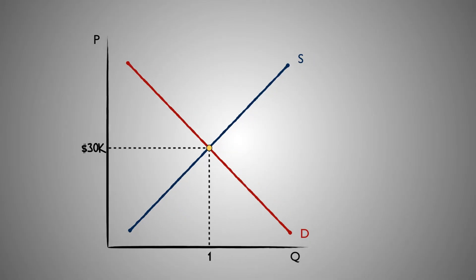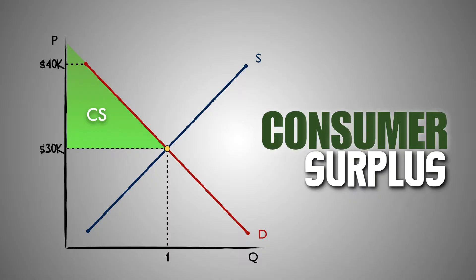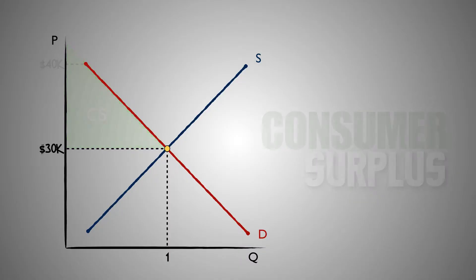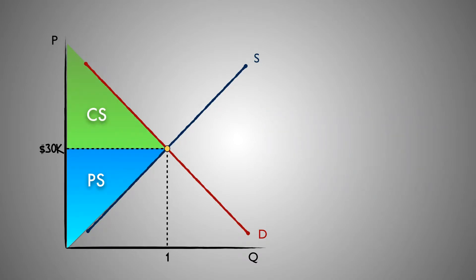From here, we can visualize the benefit you gained and the benefit the dealer gained from this transaction. The difference between your buyer's maximum price of $40,000 and the equilibrium price of $30,000 at a quantity of one car is the consumer surplus you gained in the market. The difference between the equilibrium price of $30,000 and the seller's minimum price of $20,000 at a quantity of one car is the producer surplus gained by the firm. The areas shaded on this graph represent the consumer and producer surplus gained by you and the car dealership from voluntary exchange in the market.